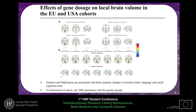It seems like the results are quite robust. The brain alterations, to summarize, are more prominent in reward system areas, as well as language and social cognition areas, which is consistent with the phenotype of these patients.